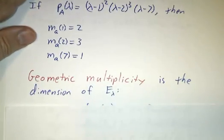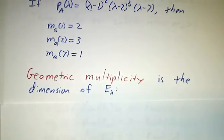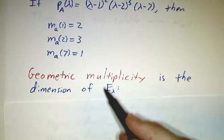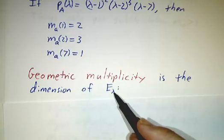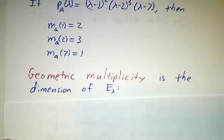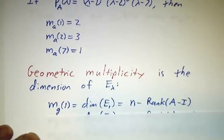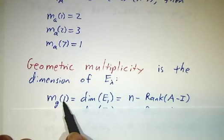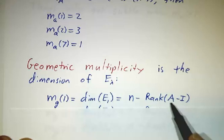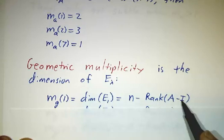Now, the geometric multiplicity describes how big the eigenspace is. For that, you have to actually figure out what E_λ is. And you do that by taking A minus λI and row reducing it. So the geometric multiplicity of 1 is the dimension of E₁, and that's going to be n minus the rank of A - I.